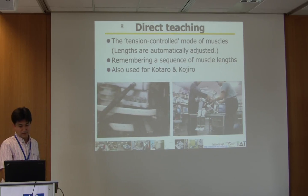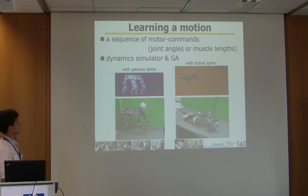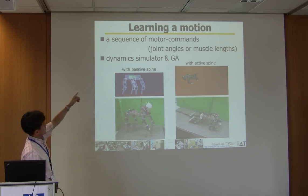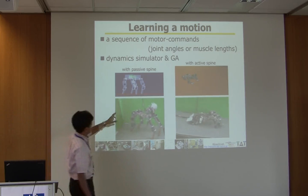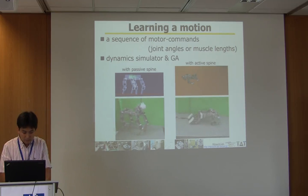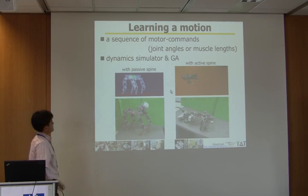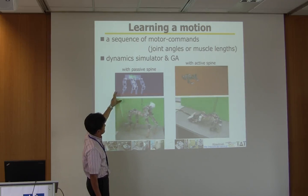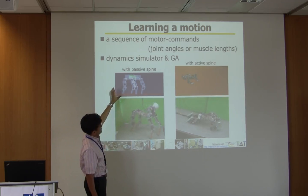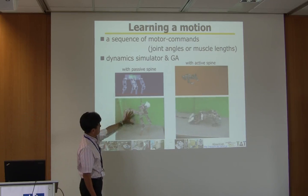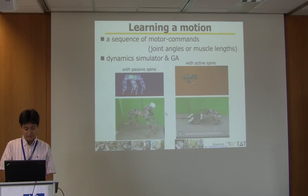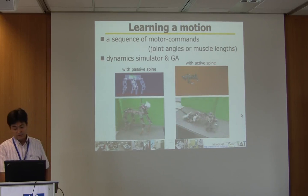Another type of generating motion uses learning — learning the sequence of motor commands such as joint angles. We use the genetic algorithm and after running, the system sends commands to the robot to optimize the motion and generate the motion to realize the task.